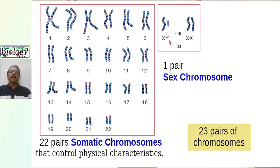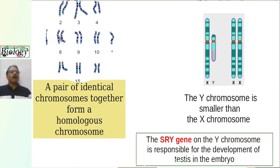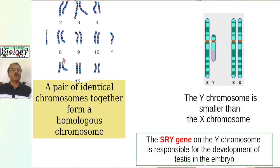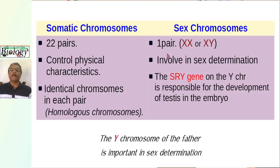XY is seen in males while XX is seen in females normally. The Y chromosome is smaller than X. Since somatic chromosomes are identical in shape, they are also known as homologous chromosomes. The somatic chromosomes are 22 pairs, and sex chromosomes are one pair — XX in female or XY in male. Somatic chromosomes control physical characteristics.